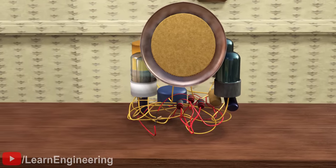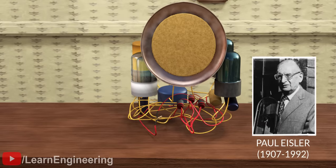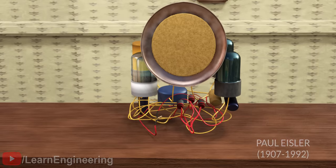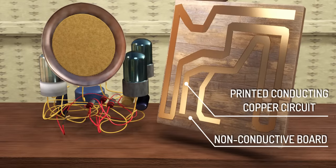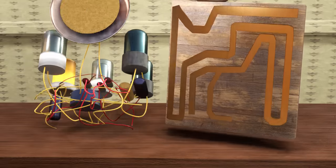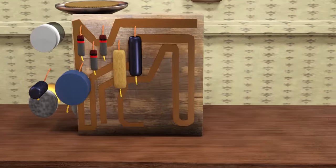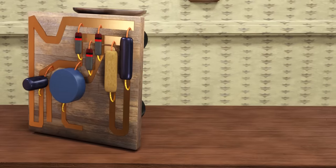In 1936, Paul Eisler, a genius engineer who worked for a newspaper company, recognized the hurdles. He invented the concept of printing conducting copper circuits on a non-conductive board as shown here, then connecting components over the traces. This is the very first PCB manufactured.